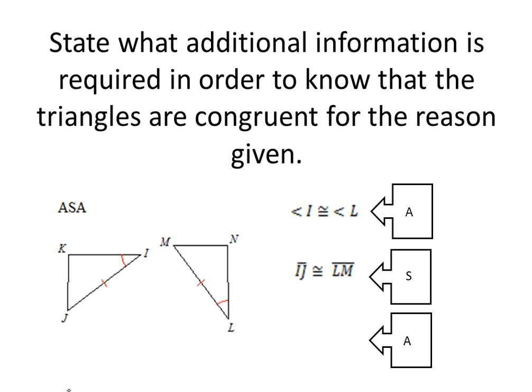Now all we need is another angle. However, it's critical that we pick the right one because we want the side to be an included side — it has to be between the two angles. So we would need angle J is congruent to angle M, and that way it would be an included side. That is the additional information we would need: angle J is congruent to angle M.